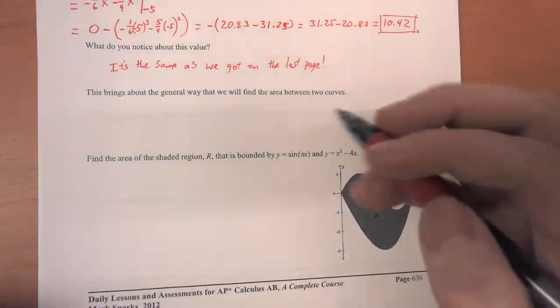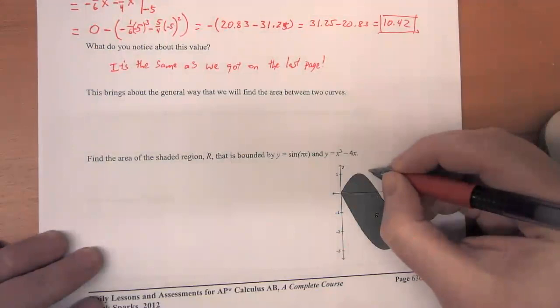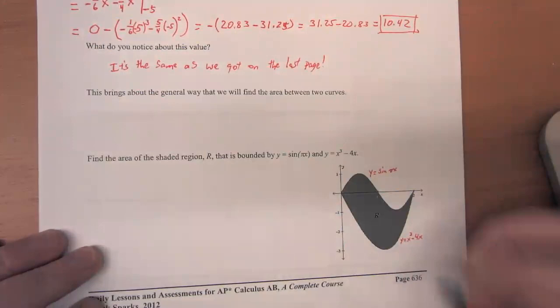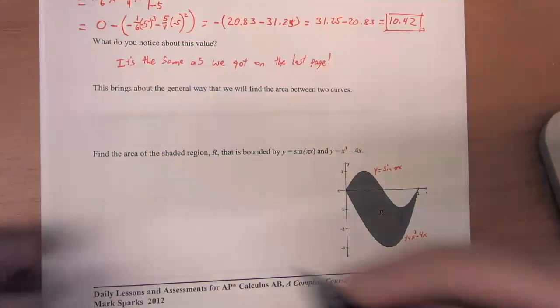So what we're going to do is we're going to use the technique we used at the top of this page. The top curve is y equals sine of pi x, and the bottom curve is y equals x cubed minus 4x.